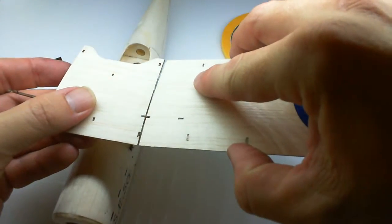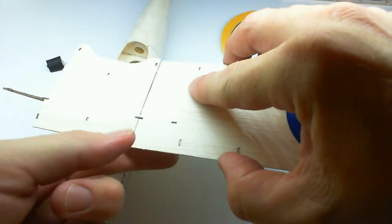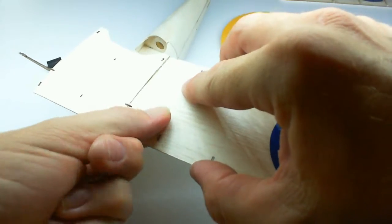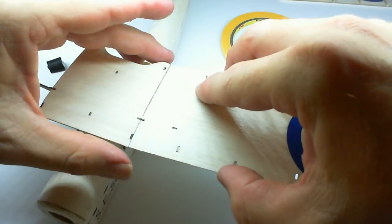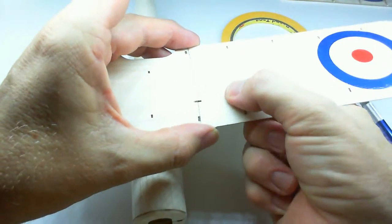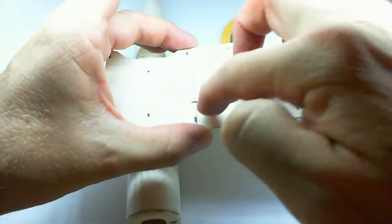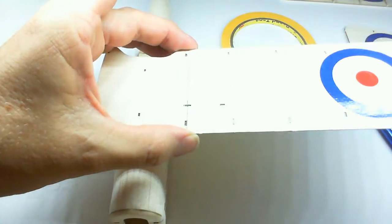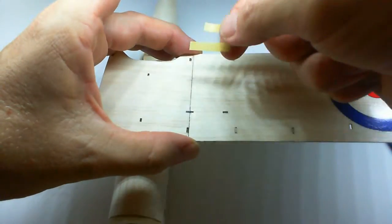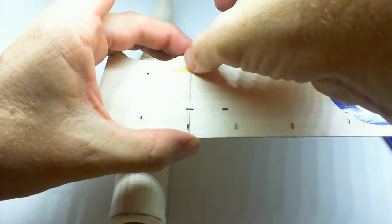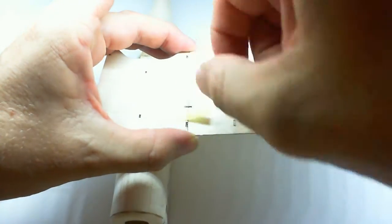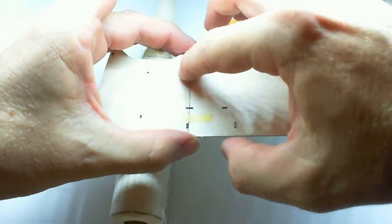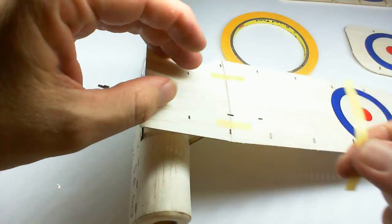Sliding the wing into position right now. Just to hold that joint together, we're going to take a few pieces of masking tape and put it here to pull it in tight.